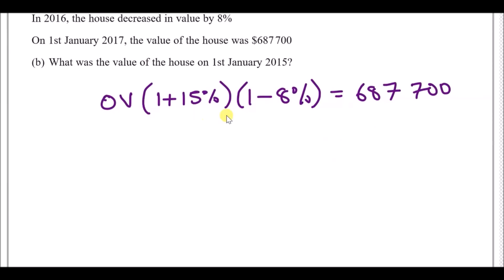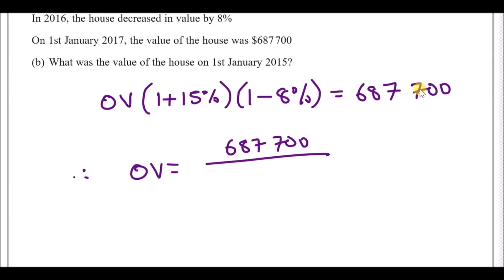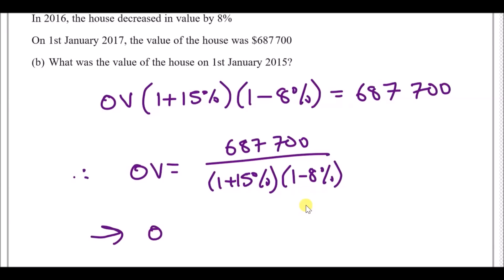To solve, use algebra and make the original value the subject. Divide both sides by (1 + 15%) times (1 − 8%). So original value equals six hundred and eighty-seven thousand seven hundred over those two brackets. Smash that into your calculator and you get the exact answer of six hundred and fifty thousand dollars.